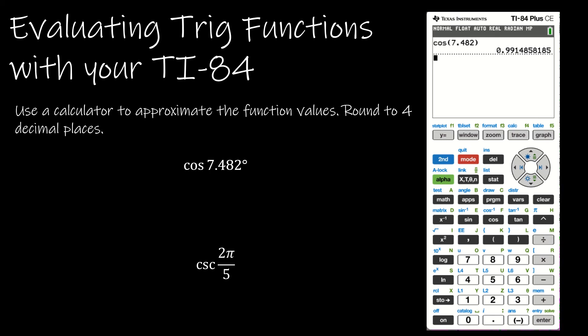But I do know that cosecant is the reciprocal of sine. So I'm going to take 1 divided by sine of 2π divided by 5. And that would give me -1.1547.